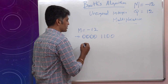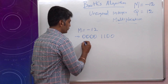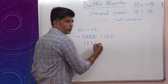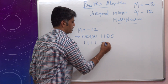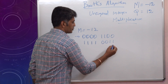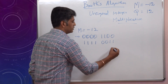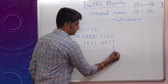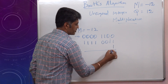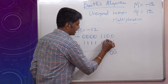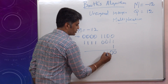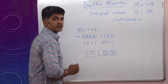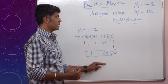For two's complement, first I take the negation of each bit. So 0 0 0 0 1 1 0 0 becomes 1 1 1 1 0 0 1 1. Then I add 1 to the negation: 1 1 1 1 0 0 1 1 plus 1 gives 1 1 1 1 0 1 0 0. This is the value of minus 12.